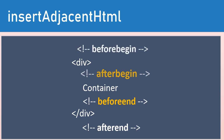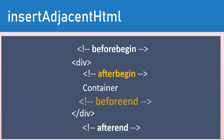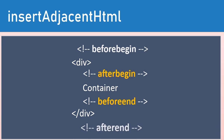When you use afterbegin, it adds the HTML just inside the element but before its first child. When you use beforeend, it adds just inside the element after its last child. And when you use afterend, it adds after the element itself. So beforebegin works exactly opposite to afterend.